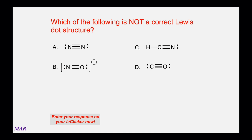Here are four Lewis structures, and one of them is not correct. See if you can figure out which structure is incorrect. I recommend that you pause the video, work on the question, and when you have the answer, unpause it and we'll talk about the actual answer.